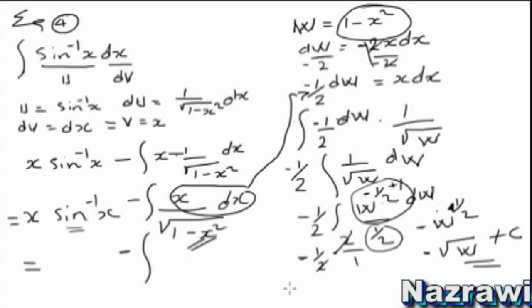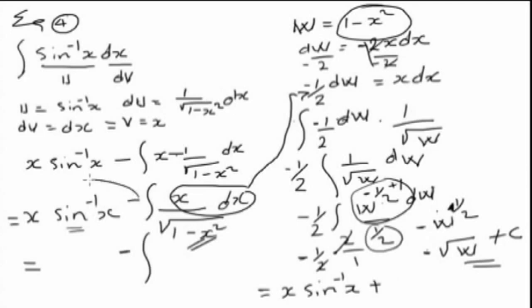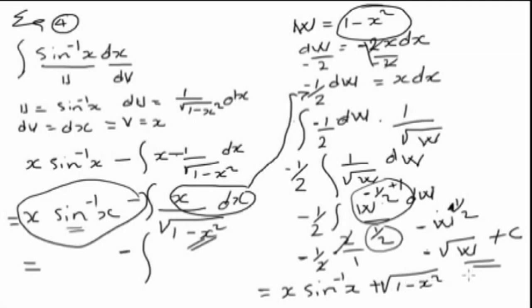So back-substituting — x sine inverse x, minus — plus — the square root of one minus x squared, that is w equals one minus x squared. So the final answer is x sine inverse x plus the square root of one minus x squared, plus C.